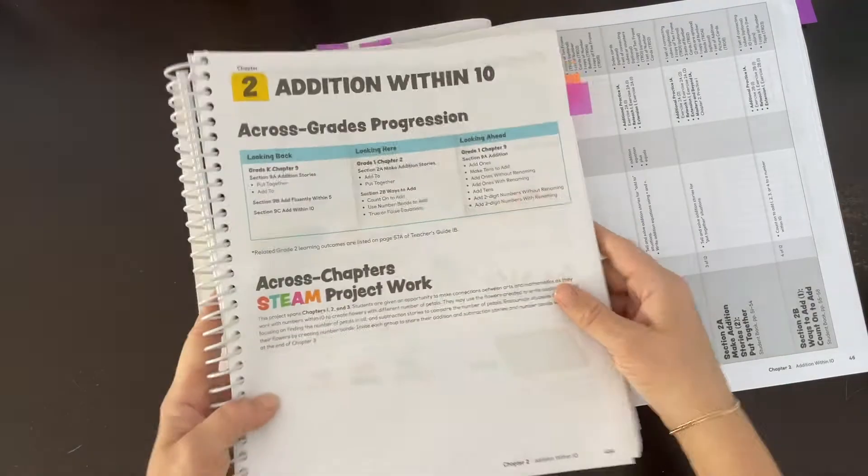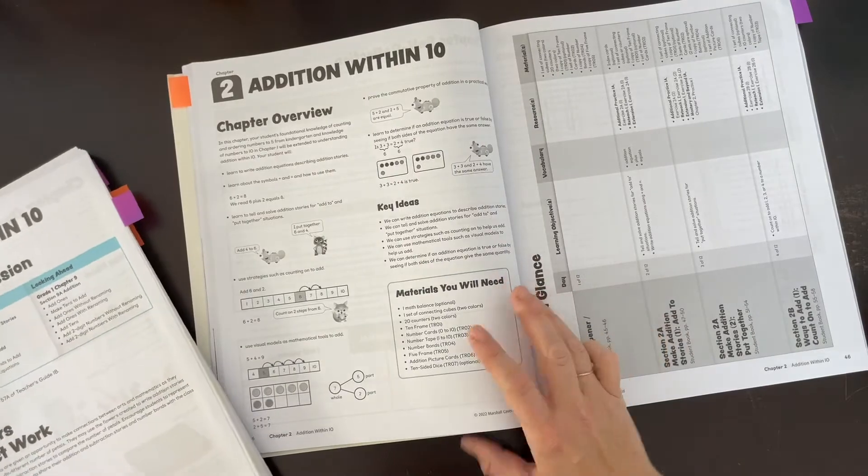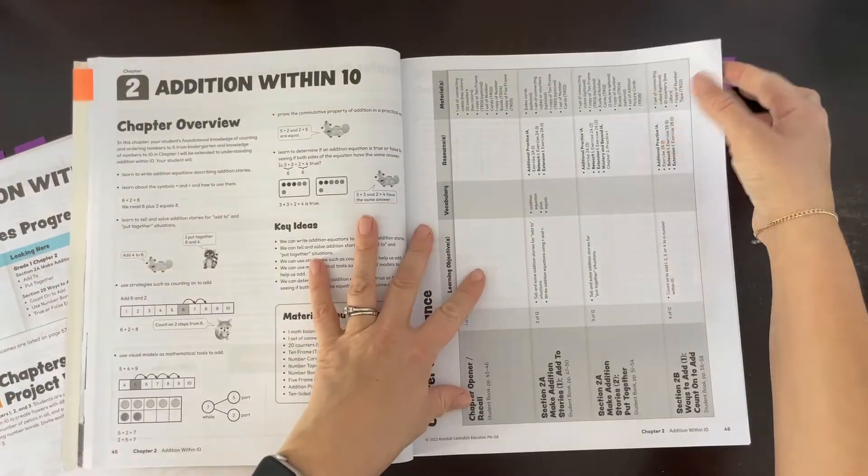Then we move to the next chapter with the chapter overview. Again in the teacher guide, we have the nice across-grades progression—we don't have that in the home instructor's guide, which I think is a bummer, to be perfectly honest.